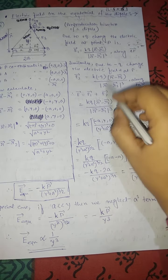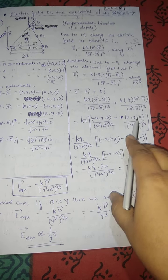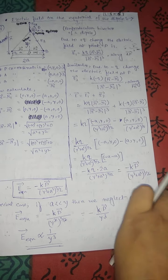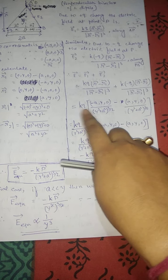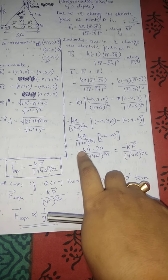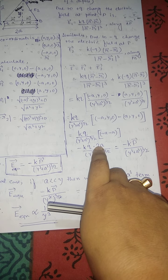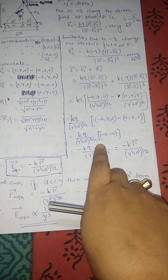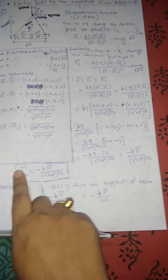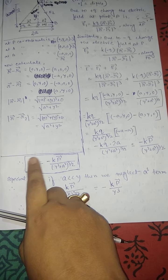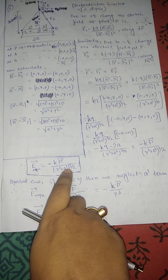Substituting into the net field expression E = E1 + E2, and placing the values — r − r1, r − r2, and raising the magnitude to the power 3/2 — we calculate and get: E = −kq(2a) / (y² + a²)^(3/2). Since 2a × q is the dipole moment p, this becomes E = −kp / (y² + a²)^(3/2).